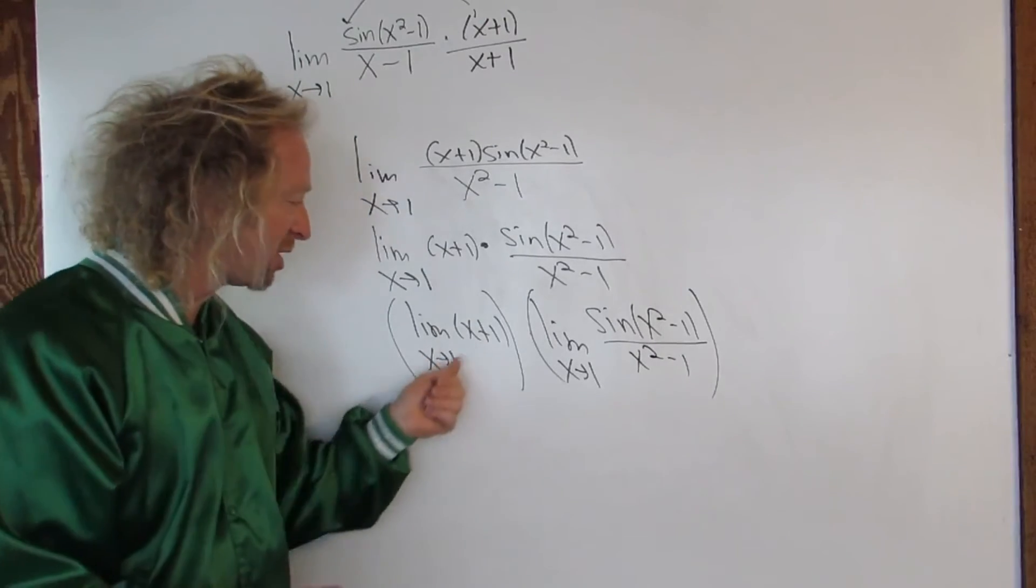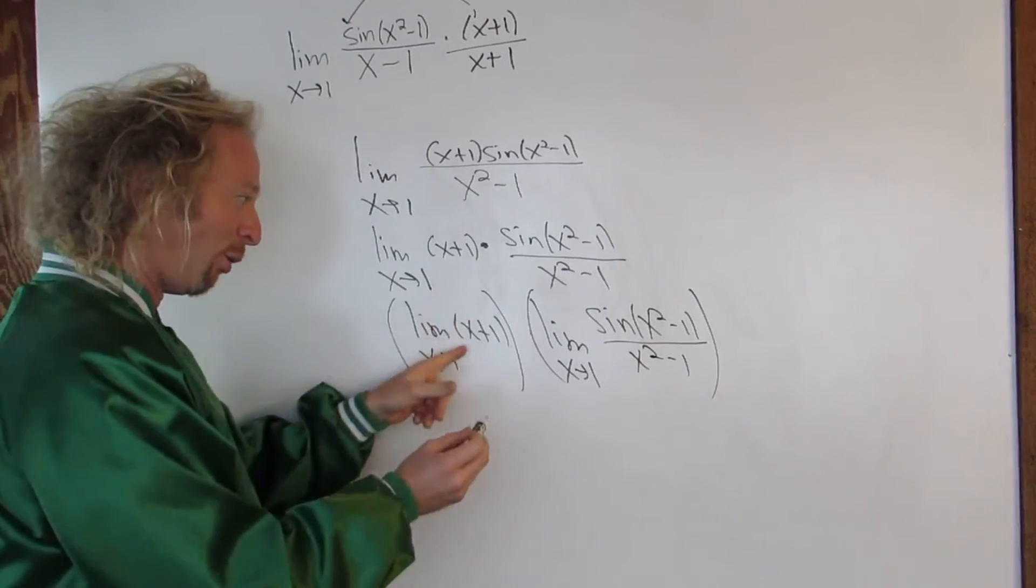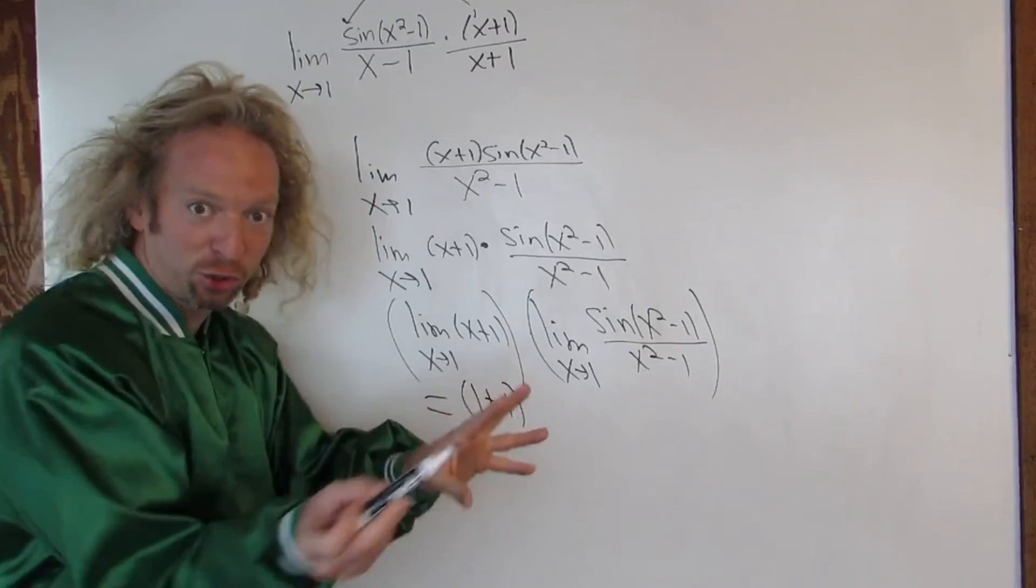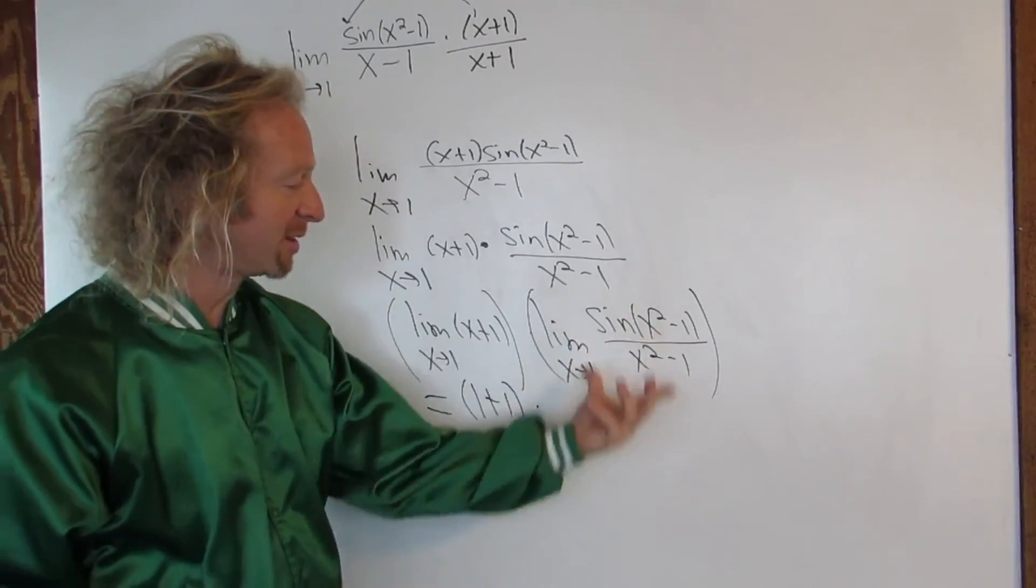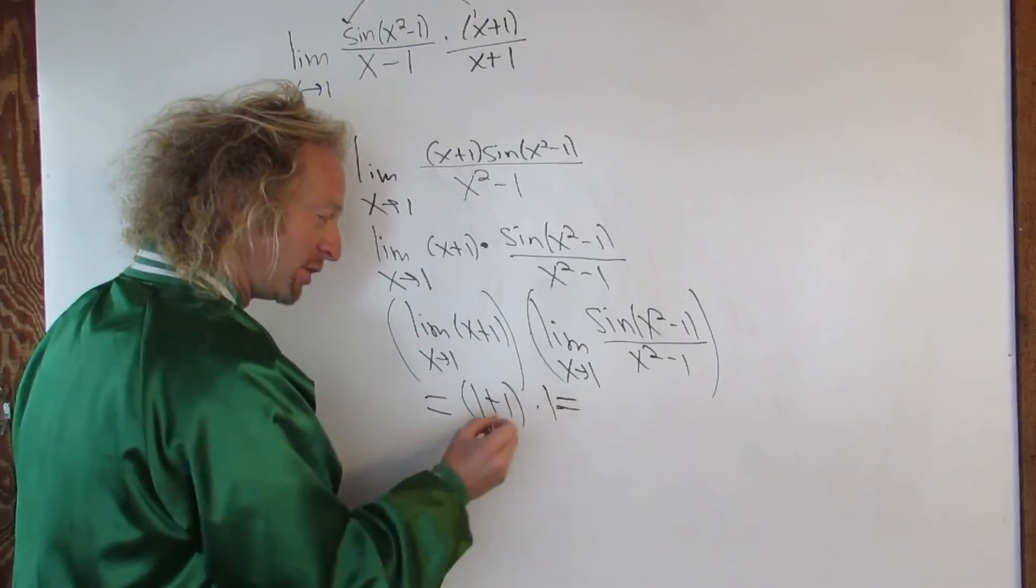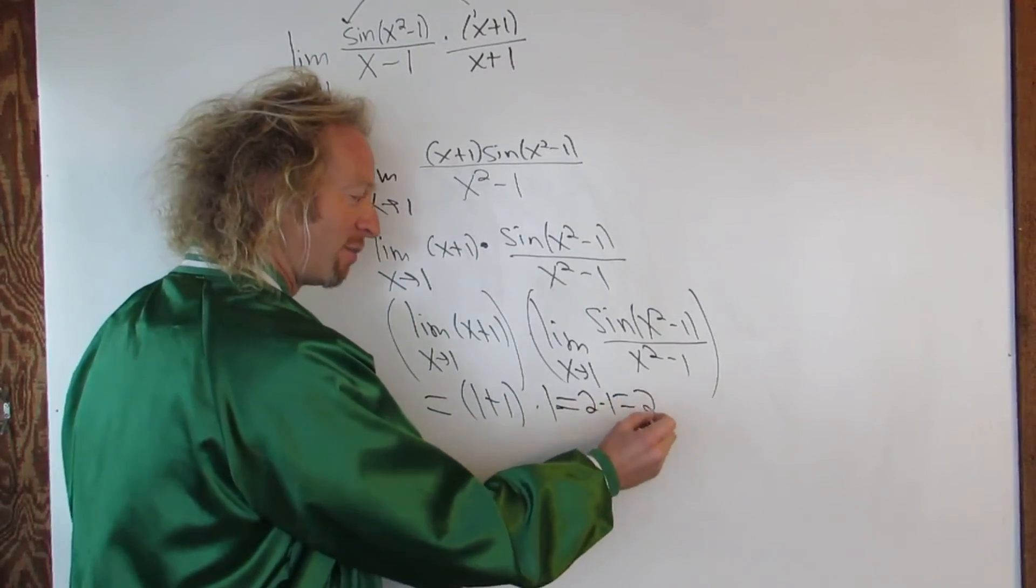Beautiful problem. So now you plug in the 1 here. 1 plus 1. Let's not mess up here. 1 plus 1, which is 2. This limit here, we talked about this before, this limit is 1. So this is 2 times 1. So we just end up with 2.